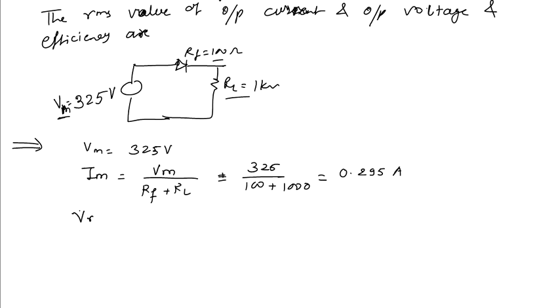Now the RMS value of the current, IRMS, RMS value of the current can be calculated, but before that we should know the waveform of the current. The current will flow only for half cycle, so the waveform of the current will be like this. So RMS will be, RMS value will be Im by 2.